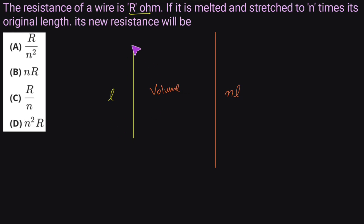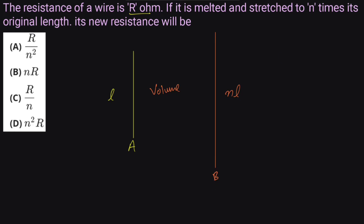The volume of this conductor will be equal to the volume of the new wire. Let's suppose the area of cross-section of the original wire is a, and the area of cross-section of the stretched wire is b — we are assuming that.